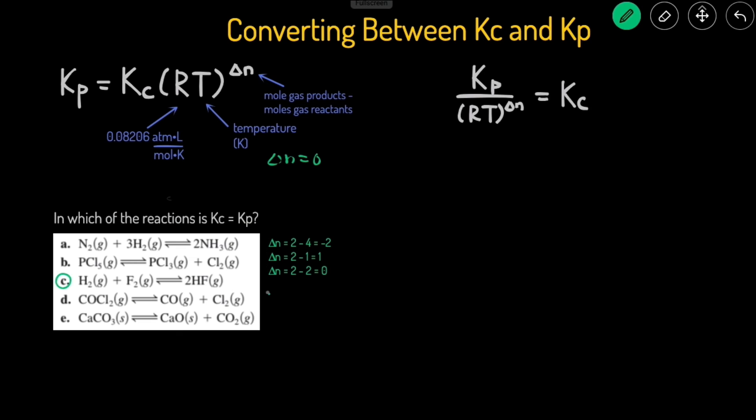Part D, delta N is equal to 2 moles of gas on the product side minus 1 on the reactant side, so that would just be 1, not that. And the last one, delta N is equal to 1 mole of gas on the product side. We're not going to count this because this is a solid, minus actually 0 moles of gas on the reactant side, so that would just be 1. That means the only answer to this question is C, because in all the other ones, there was a decrease in the moles of gas, increase, increase, increase. It's only in C in which there was no change in the moles of gas.